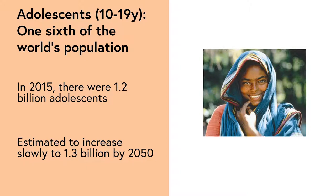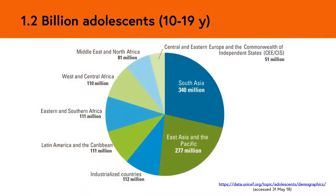Adolescents represent one-sixth of the world's population. In 2015, there were just over 1.2 billion adolescents in the world — the most there have ever been — and that's estimated to increase gradually to about 1.3 billion by 2050. Out of the total population, the proportion who are adolescents varies substantially by region, with the greatest proportion in the least developed countries and the smallest proportions in the industrialised countries.